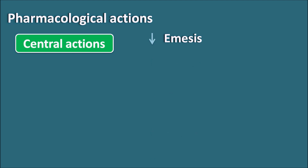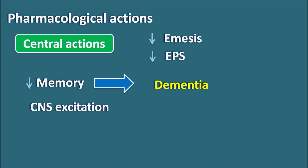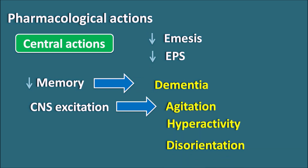Finally — central actions. Hyoscine can decrease emesis and is used as an antiemetic. Some anticholinergics decrease extrapyramidal side effects produced by antipsychotics — particularly benzotropine and benzhexol are used to decrease extrapyramidal side effects. M1 receptors within the CNS are responsible for memory, and when blocked, anticholinergics can decrease memory, resulting in dementia. Hyoscine can produce dementia, and anticholinergics can also produce CNS excitation — agitation, hyperactivity, disorientation — and at very toxic doses, hyperthermia.